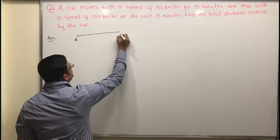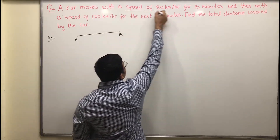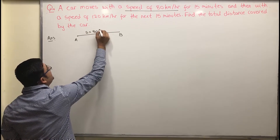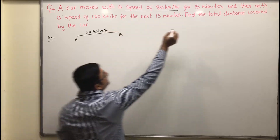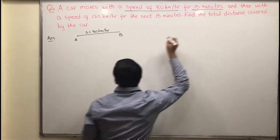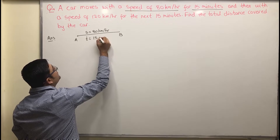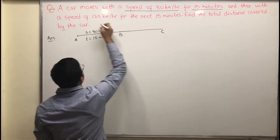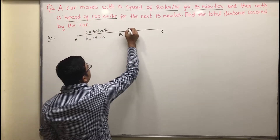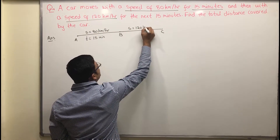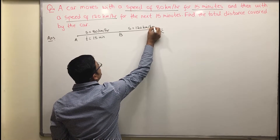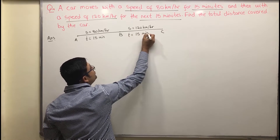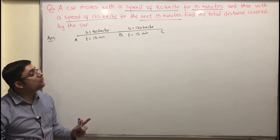Let's say the car starts from point A and goes to point B. From A to B, it is moving with a speed of 80 kilometers per hour, and the time duration is 15 minutes. Then it goes from B to point C, where the speed is 120 kilometers per hour, again for 15 minutes. This is how we draw a figure to visualize our problem.